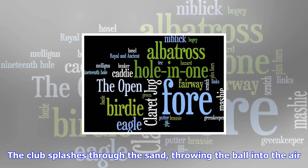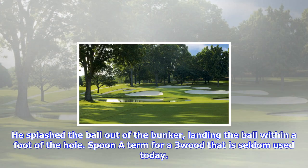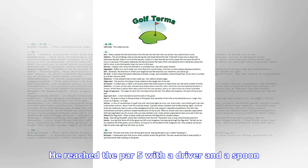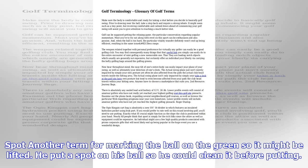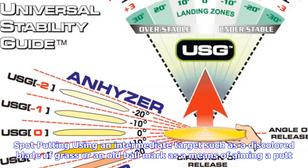Pronation: inward rotation of the hands towards the body's center line when standing in a palms-facing-forward position. The term was inaccurately used for many years to describe the rotation of both hands through the impact area. In fact, one hand (the right) was pronating while the left was supinating. Obviously, it is impossible to pronate both hands through the shot.